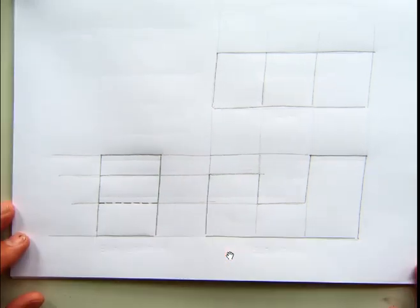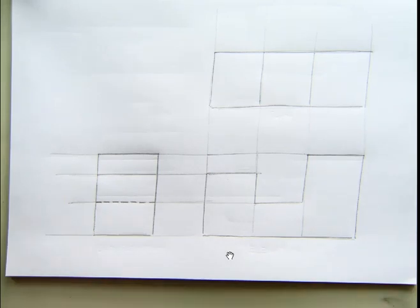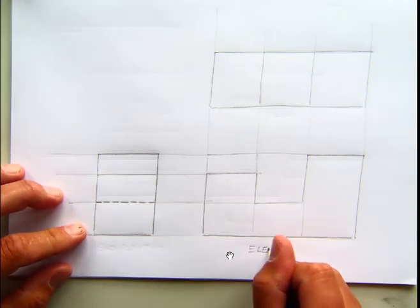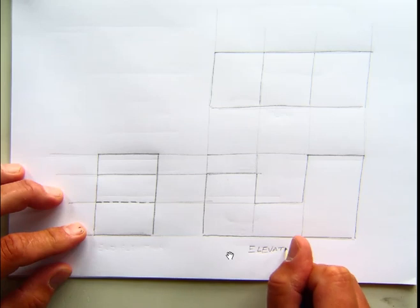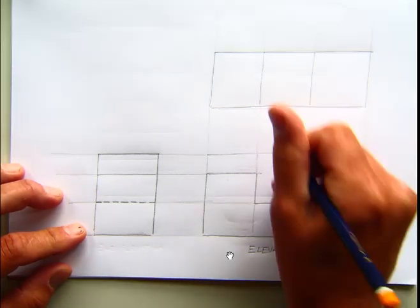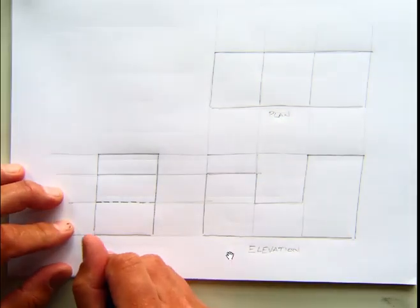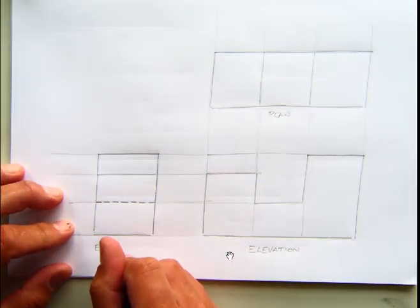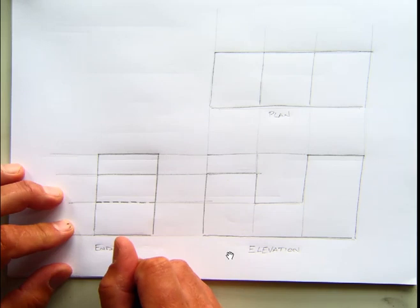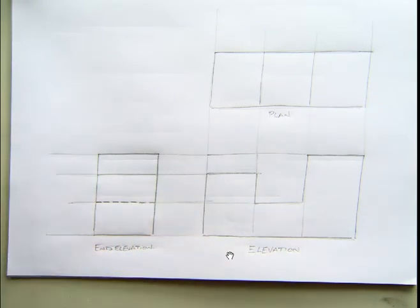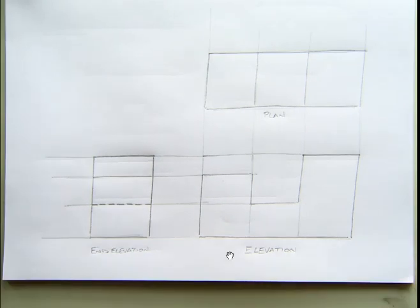So that is my three views of this shaped block. Okay, I'll just quickly label each of the views, so again, you're getting into the habit of knowing what all the different views are, the plan is always above the elevation, the end elevation is always to the side of the elevation, either to the left or to the right. And that is the end of lesson two. Good luck, and enjoy.